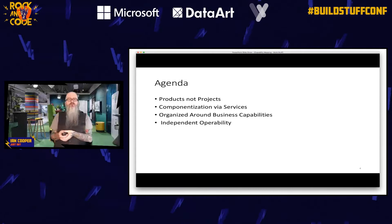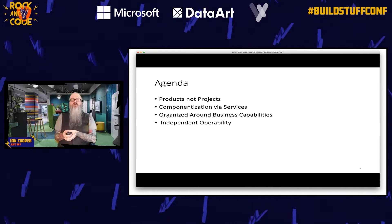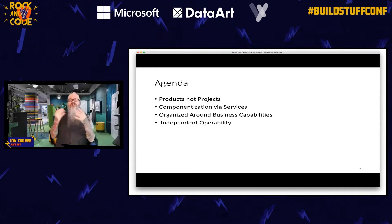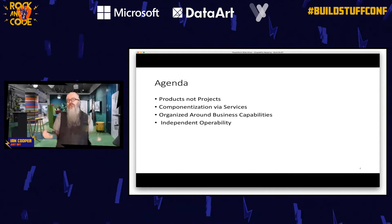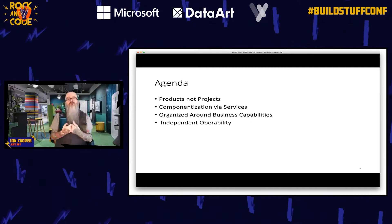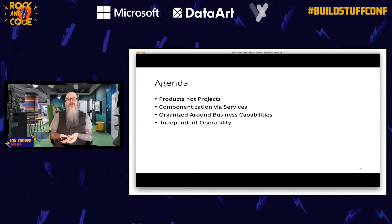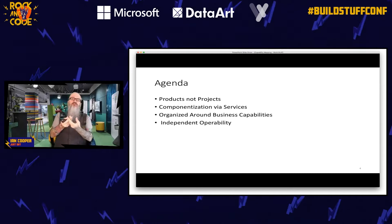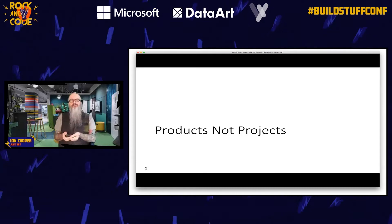The agenda covers: microservices as an enabler for moving towards a product focus rather than a project focus; avoiding lots of collaboration and coordination between teams; componentization via services and what that means for partitioning; and the core topic of organizing around business capabilities. We probably won't get much into independent operability.